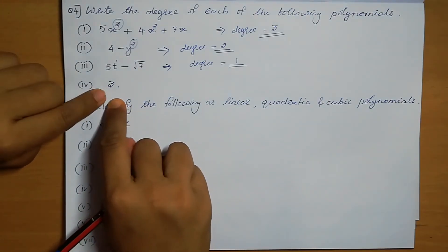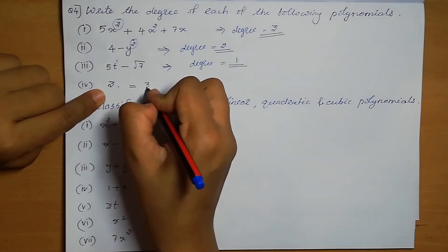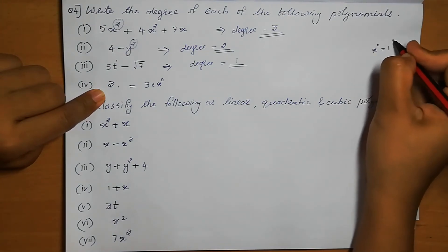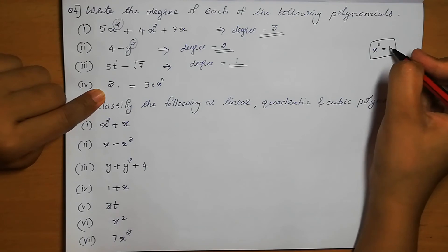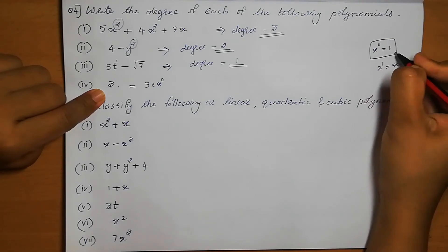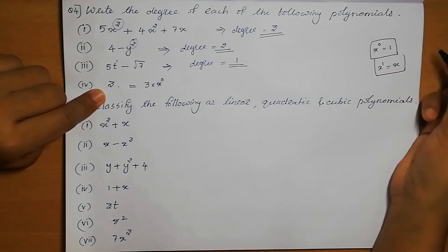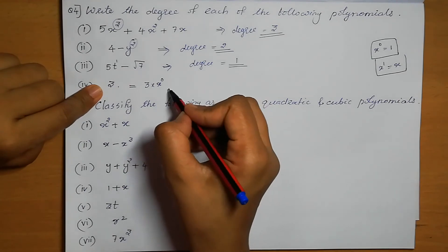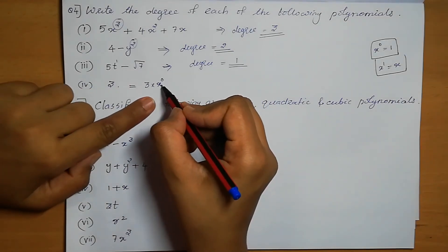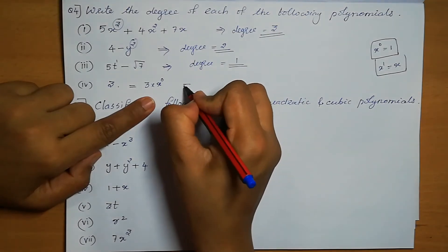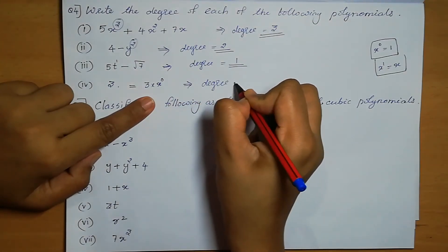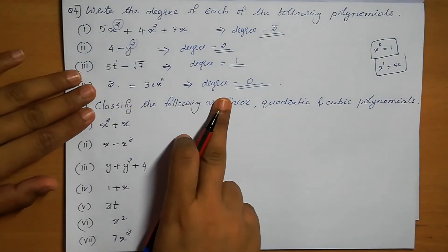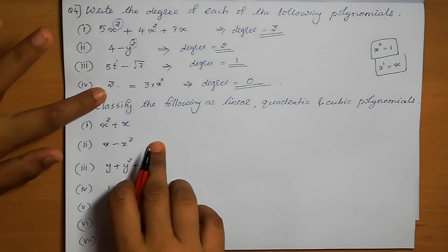For the constant polynomial 3: we can write 3 as 3 times x power 0, since x power 0 equals 1. So the power of the variable is 0, and the degree of the polynomial is 0. If it is a constant, the degree is 0. This 3 is also a polynomial.